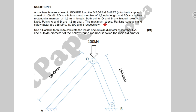The maximum stress, Rankine constant, and safety factor are 325 MPa, 1 over 7500, and 5 respectively. We will use the Rankine formula to calculate the inside and outside diameter of member OA. The outside diameter of the hollow round member is twice the inside diameter.